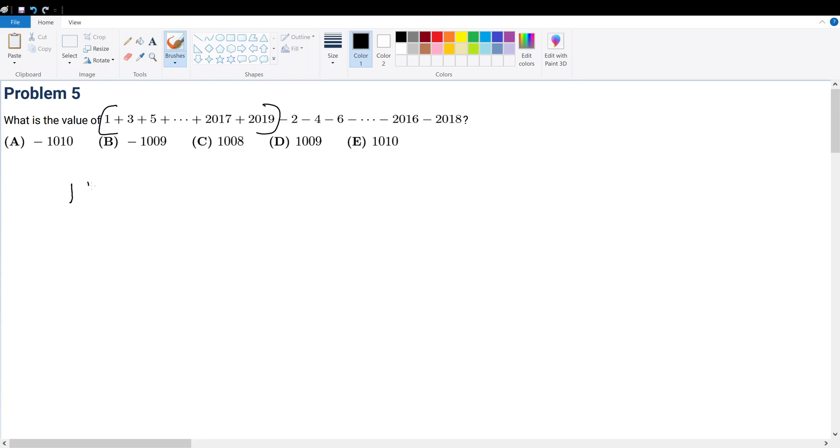Let's rewrite it. That's 1 plus 3 plus 5 plus all the way until 2019, and we subtract by parentheses 2 plus 4 plus 6 plus all the way until 2018.